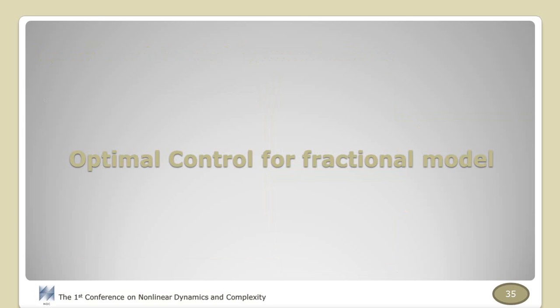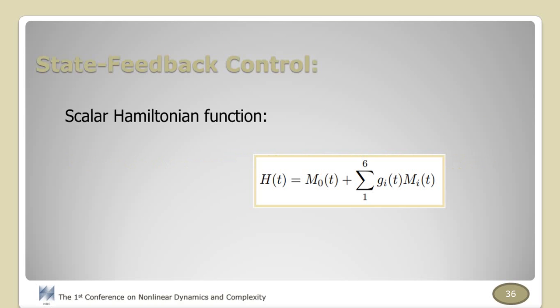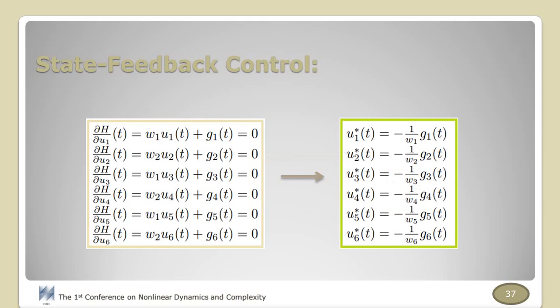In this part, we propose an optimal chaos controller to diminish the hyperchaotic behaviors of the non-autonomous cardiac oscillator. The purpose is to obtain an optimal control signal which minimizes the objective function introduced before. In order to solve fractional equations, we should derive the necessary optimality conditions. For this purpose, we consider the scalar Hamiltonian function like this, where M0 is the integrand function in performance index, Mi is the right-hand side of the fractional equation in the main model, and Gi is the Lagrange multiplier, also known as co-state variables. Considering the necessary optimality conditions and utilizing the predictor-corrector method and a forward-backward-sweep iterative algorithm, the control input is like this.